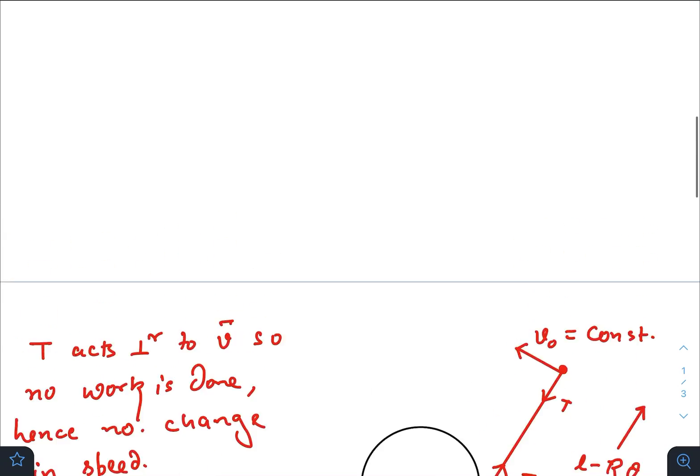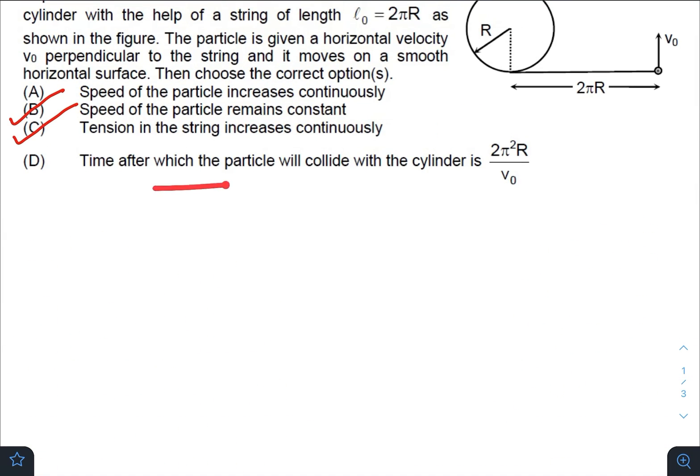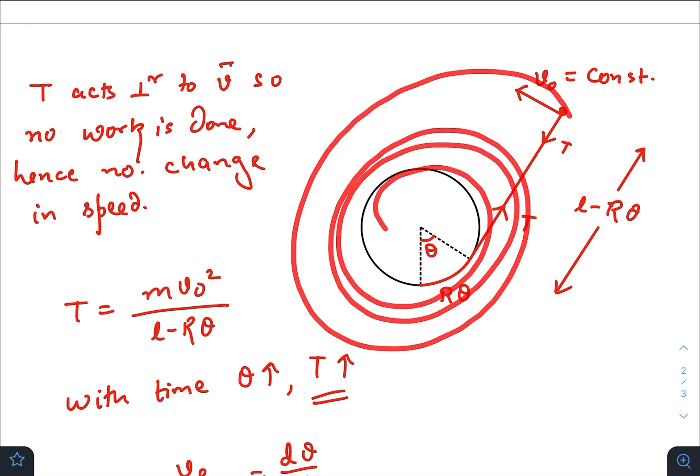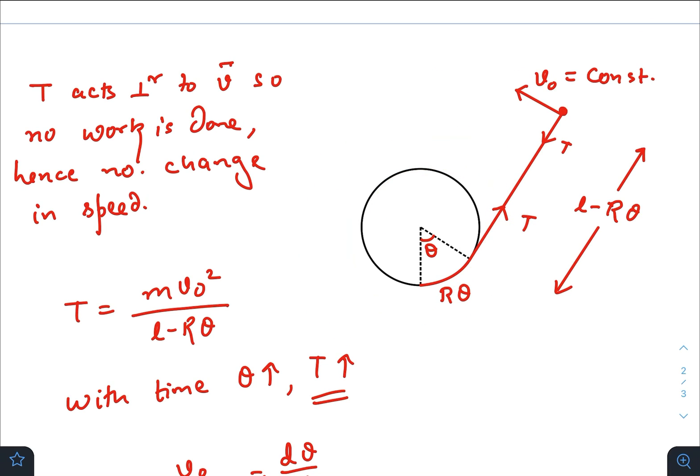So tension is increasing continuously, option C is also correct. Now time after which the particle will collide with the cylinder: a time will come when this particle will take a spiral path and it will hit the cylinder. That means the whole string has wrapped over the cylindrical surface.